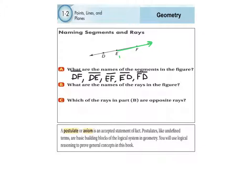So I would start right there on E and go towards F, which means my ray's name starts with E as the endpoint — the starting point is E, then I go towards F. Your notation always has an arrow on the right on top. Now let's start at E again and go the other direction, back towards D. That's another ray — starting point E, going toward D. Even though it's going left, the arrow always points to the right.